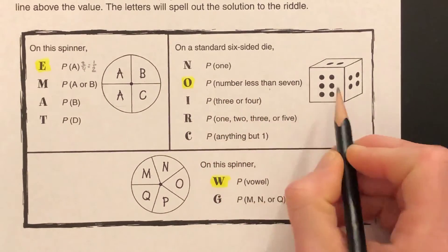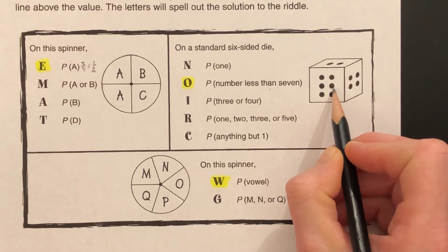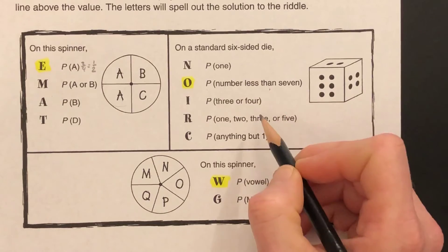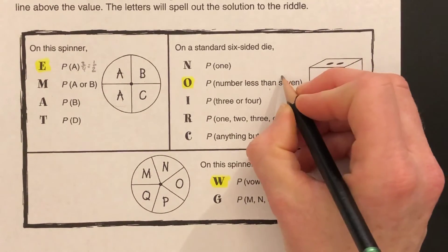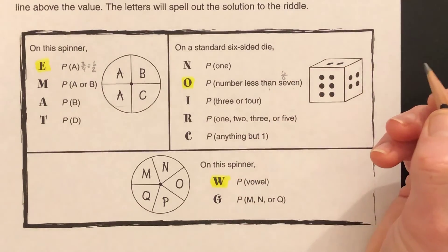This is a die, has six sides, and the biggest number is six. So all the numbers are less than seven, so you have a six out of six probability of landing on a number less than seven.